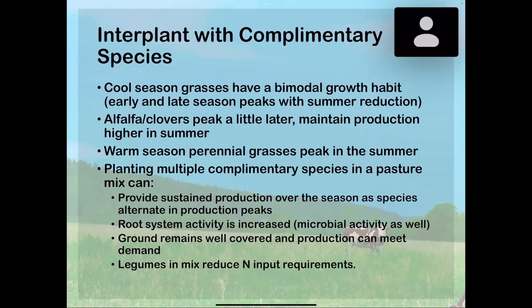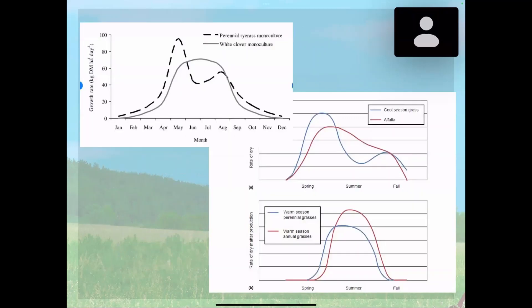The ground remains well covered, production meets demand, and we don't have to graze as intensely — allowing us to rotate more freely through rotational grazing. Legumes in the mix can also reduce overall nitrogen input requirements for the entire pasture, as mentioned in the fertilizer recommendations.